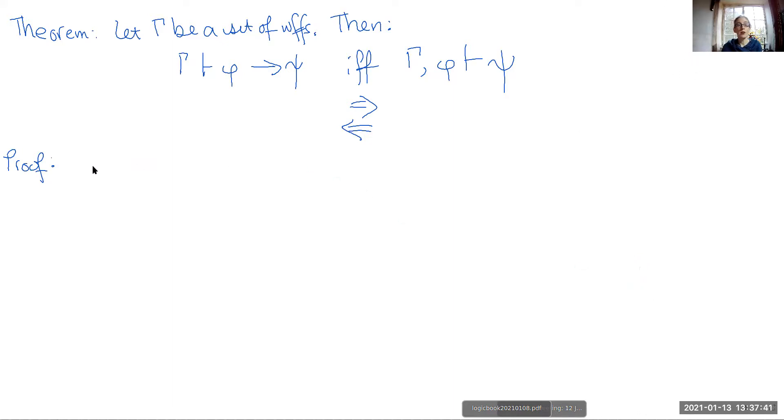If we're going to be proving the other direction, we need to actually be able to prove. Then we start off by assuming this. So we will assume that from gamma and phi as our assumptions that we can prove some formula psi.